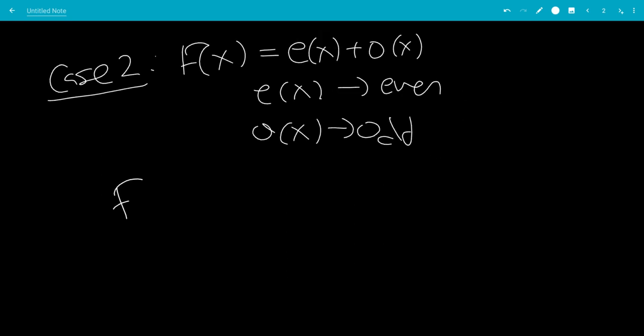So now let's plug in x being negative x. So f(-x) = e(-x), but that just turns into e(x). And then o(-x) turns into -o(x). So let's do f(x) quantity squared.